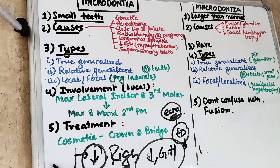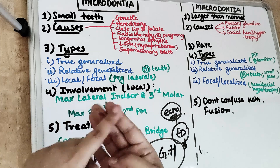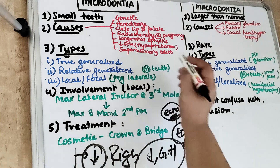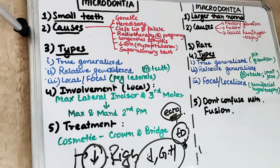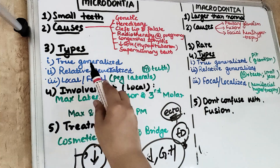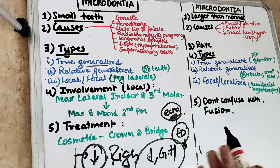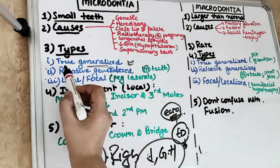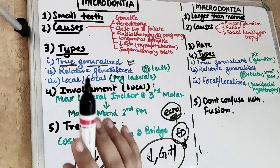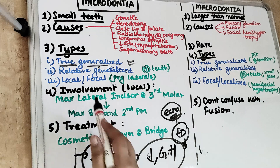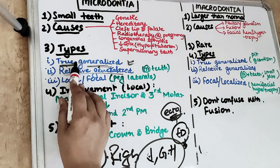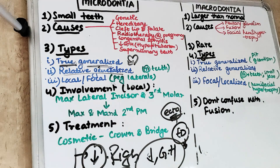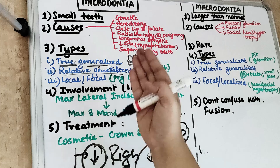To summarize the causes: genetic and hereditary, cleft lip and cleft palate, radiotherapy in a pregnant woman, congenital syphilis, decrease in growth hormone, and supernumerary teeth. Coming to the types — the types of Microdontia and Macrodontia are the same. True generalized means all the teeth are truly smaller in size, whether permanent or primary. This type is mostly seen in Down syndrome as well as congenital heart disease.